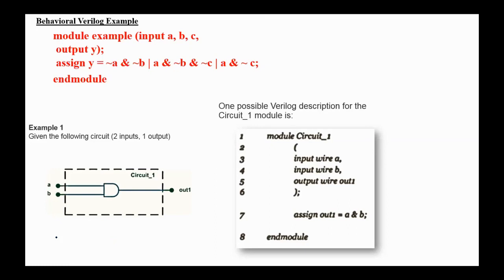Here is one possible description for the AND gate using Verilog. In the module, we have inputs A, B, and output 1. Here in the module, we have input wire A, input wire B, output wire 1. And we assign the output wire A and B.